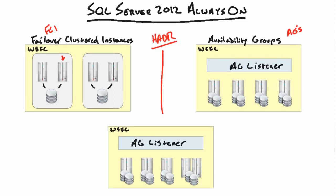To accomplish this level of HADR in previous versions of SQL Server was difficult to say the least. We had to use a hodgepodge of technologies — everything from log shipping to replication to database mirroring. We did have failover clustering, but it wasn't quite at the level that we have here.